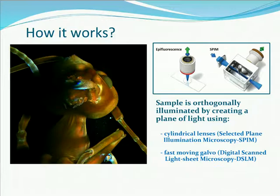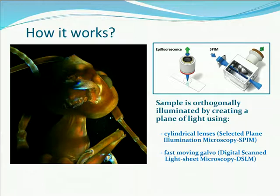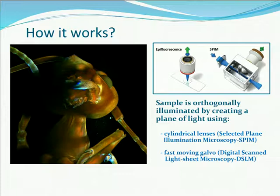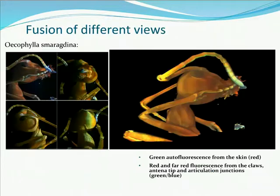In epifluorescence, the same objective is used to excite and collect fluorescence. In light sheet, the illumination and detection axes are decoupled. The axial resolution (XY) is determined only by the detection objective. The light sheet can be created in two ways: using cylindrical lenses, called Selective Plane Illumination Microscopy or SPIM — the most well-known approach — or by moving a galvo mirror very rapidly to create the illumination plane, called Digital Scanned Light Sheet Microscopy, or DSLM, which has many advantages I'll explain.